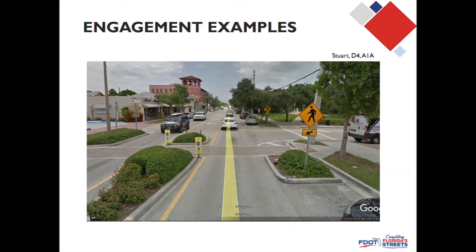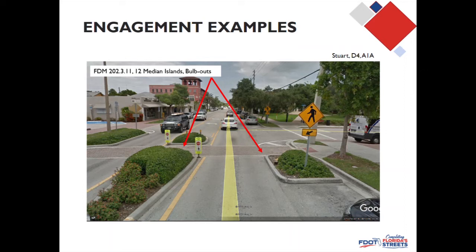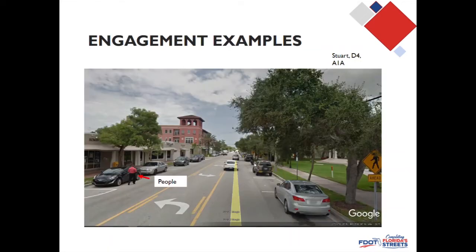Here's an example in Stuart, Florida along A1A showing different types of engagement. We can see bulb-outs and median islands that squeeze the space down and create engagement with the motorist. These are covered in FDM 202.3.1, sections 11 and 12, within the speed management chapter. You can also see signs here that have a similar effect. In more urban conditions, people walking around and on-street parking are themselves examples of engagement with the environment.